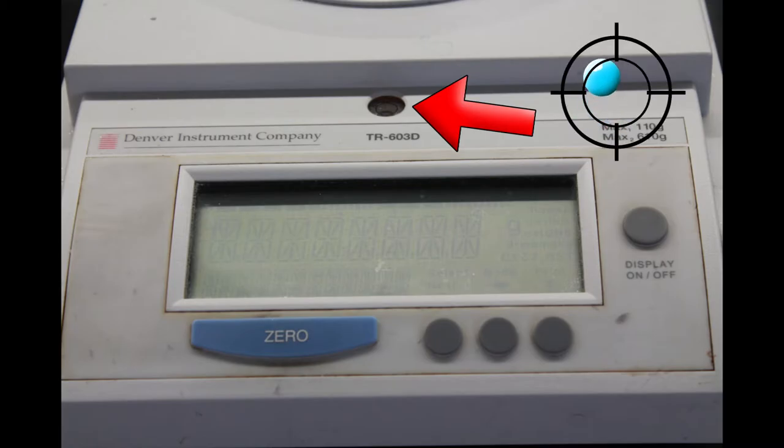The balance should be leveled so that the bubble lands in the center of the target. Ask a TA to help you if your balance is not leveled.